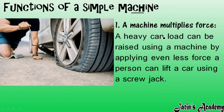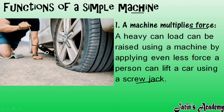The first function is that a machine multiplies force. For example, when you are on a road trip and the tire of the car gets punctured, you want to change the tire. You cannot lift the car with your muscular force. So here we use a machine known as a screw jack — this person is using a screw jack to lift the car up.